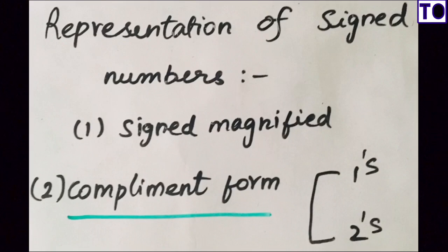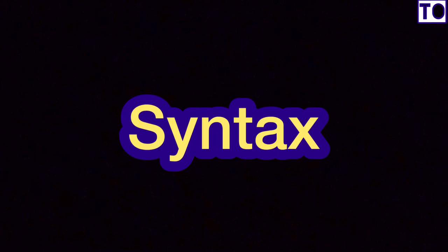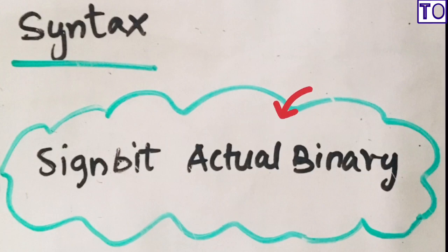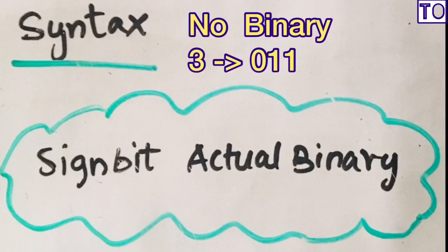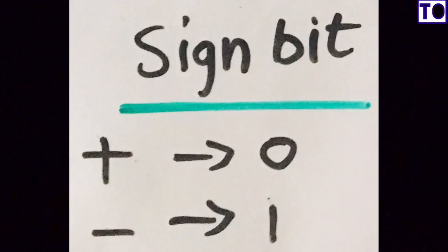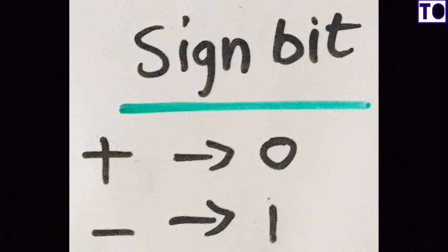Let's talk about the syntax. Sign bit comes first, followed by the actual binary number. If you have a 3-bit binary number, you have a sign bit. The sign bit: plus is represented as 0, and minus is represented as 1.